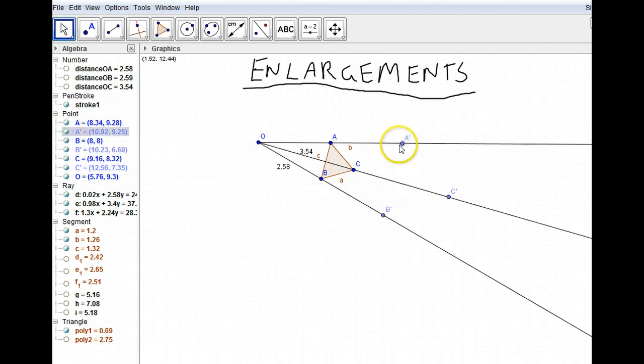Now you notice that I've labeled each of my dots A dash, C dash, B dash. That's to represent that they're the same corner from this triangle, only this triangle is going to be bigger. Finally, all you need to do is join your dots. And there we go.